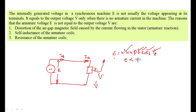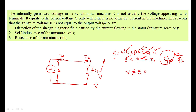This flux phi varies because of the armature flux. There are two fluxes: the main flux phi and the armature flux phi_A. Because of phi_A, there is a variation in the main flux phi. If there is any change in phi, then the generated voltage is also changing. Therefore, the terminal voltage V is not equal to the generated voltage E. One reason for this is armature reaction — when current flows, it produces its own magnetic flux which modifies the main flux, and when the flux varies, the generated voltage also varies, ultimately affecting the terminal voltage V.